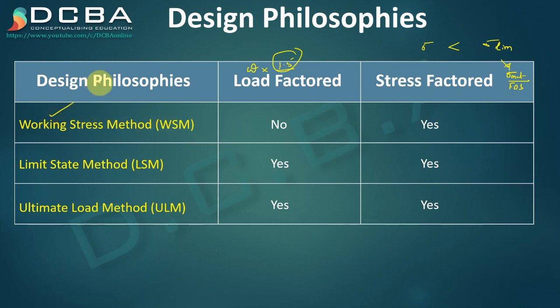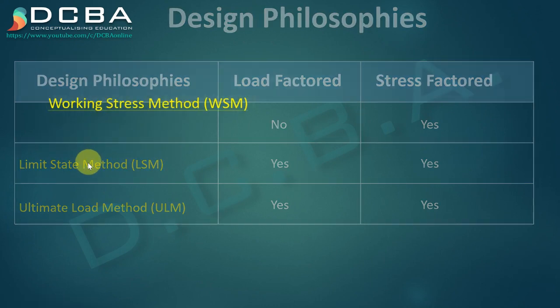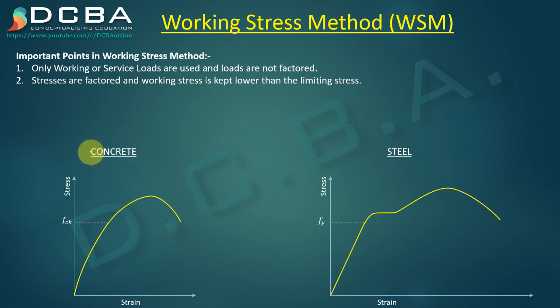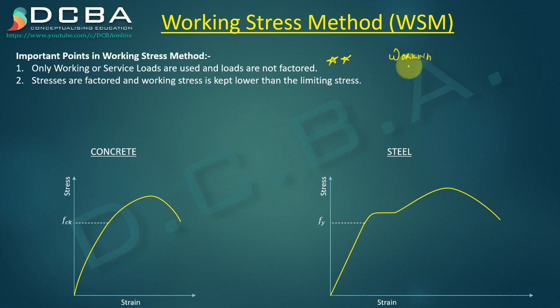Let us start with the Working Stress Method. This is just an introduction — we are not going to get into details because the Working Stress Method is kind of obsolete. It used to be used before and it gives a very strong section, but it's not economical. An important point to remember is that only working or service loads are used; loads are not factored. We do not use ultimate load — we use working load. If you factor the working load, it becomes ultimate load.